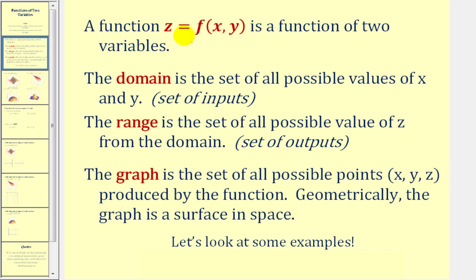A function z equals f of x, y is a function of two variables. So z is defined in terms of both x and y. Therefore the domain is the set of all possible values of x and y. X and y will be the inputs into the function and z will be the output. The range is the set of all possible values of z from the domain.